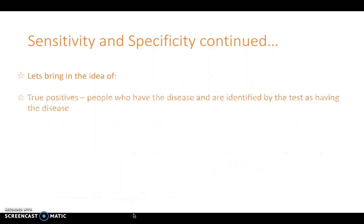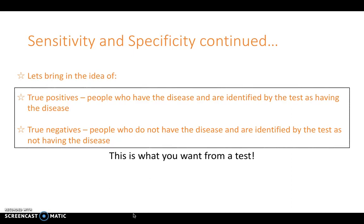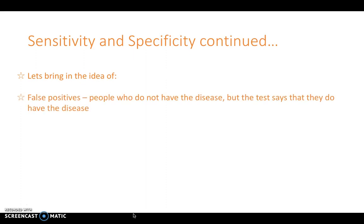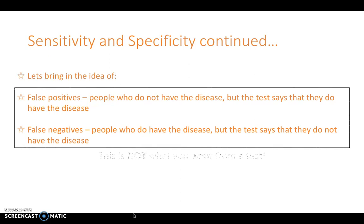True positives are people who have the disease and are identified as having it by the test. True negatives are people who do not have the disease and are identified by the test as not having it — these are the results you want. The things you don't want are false positives, where someone does not have the disease but the test says they do, and false negatives, where someone does have the disease but the test says they don't.